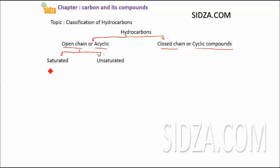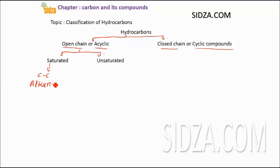Saturated hydrocarbons have a carbon-carbon single bond only — there is only a carbon-carbon single bond. These are also called alkanes. The general formula of alkanes is CnH2n+2.